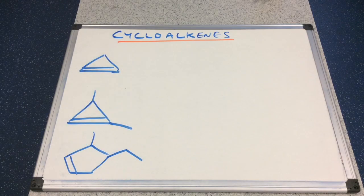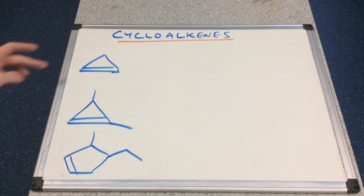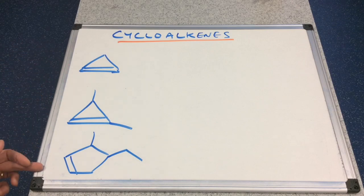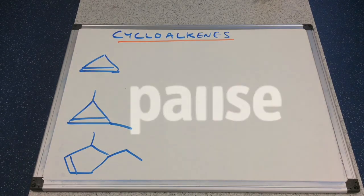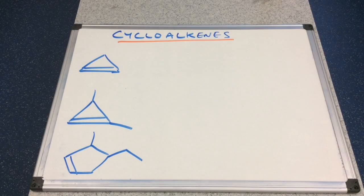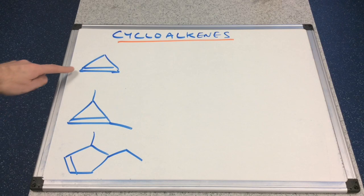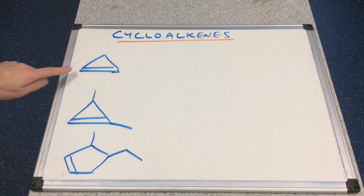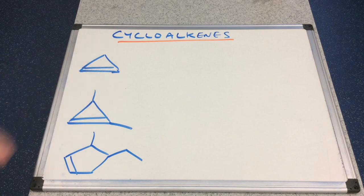We'll use the rest of the video to name some cycloalkenes. I've drawn three up on the board and they're gradually getting more difficult to name. Then when we've looked at the answers to these, I'll do a couple more. For an easy one to start, we've got a ring of three — so this is cyclopropene — with a carbon-carbon double bond. This is called cyclopropene.